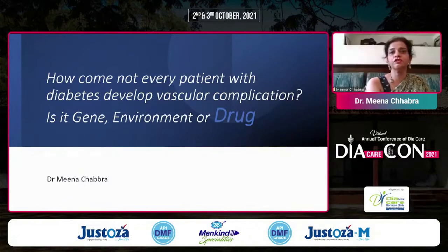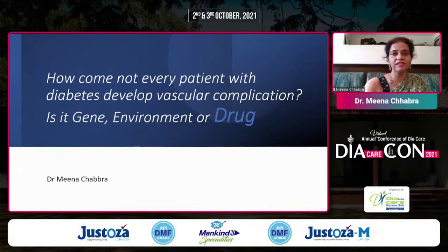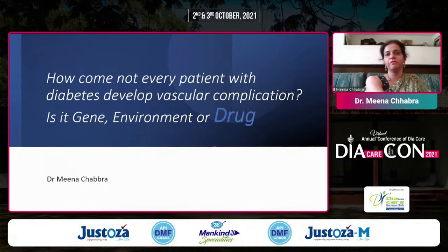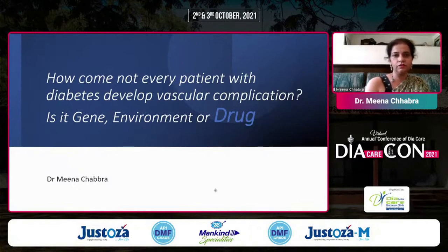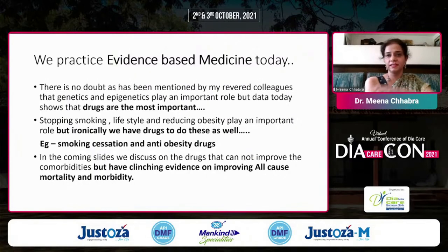This is a three-sided discussion of the same problem, and I agree wholeheartedly with my first speaker that all of them — genes, environment, and drugs — play a role. But what I would like to reiterate, because I have been given the job today, is that drugs play an important role irrespective of the environment and the gene. We practice evidence-based medicine. Genetics and epigenetics are important — we know the Indian phenotype, we know epigenetic changes — but data today shows that drugs are very important.